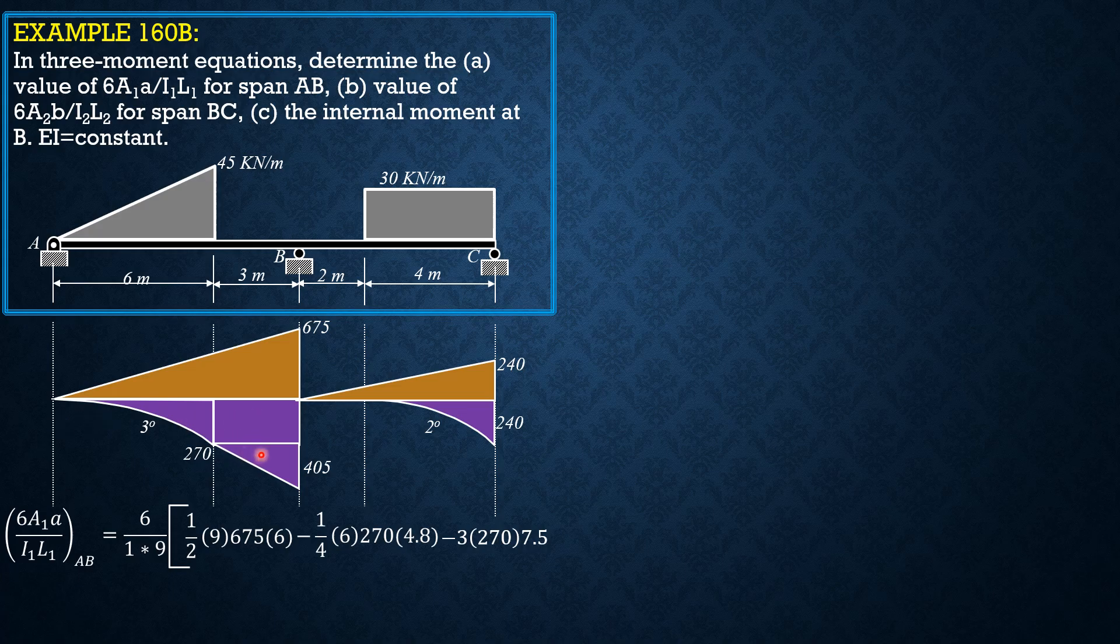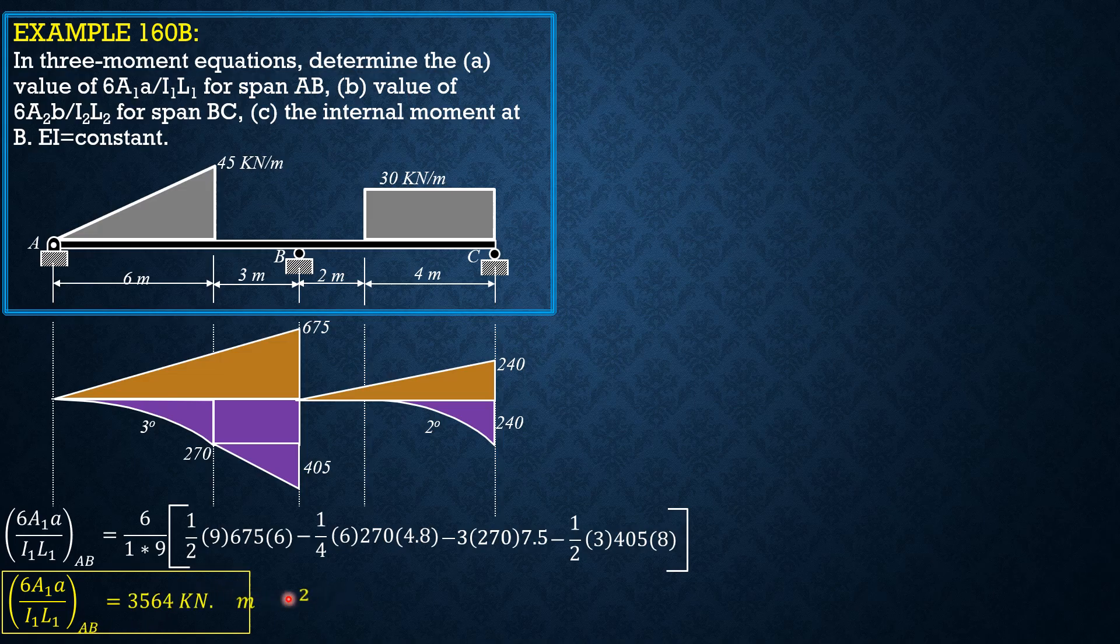Then, minus area of this triangle, 1 half of 3 times 405. Because this is 1, the distance of the centroid of this triangle from the left is 8. So, minus 1 half of 3 times 405 times 8. Then, evaluating the value of 6 area 1A over I1L1 is equal to 3,564 kilonewton meter square.